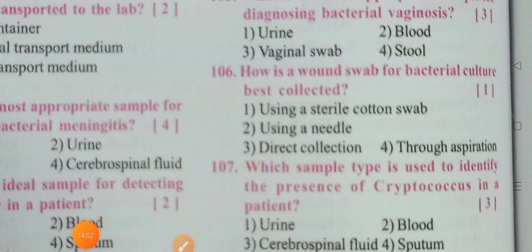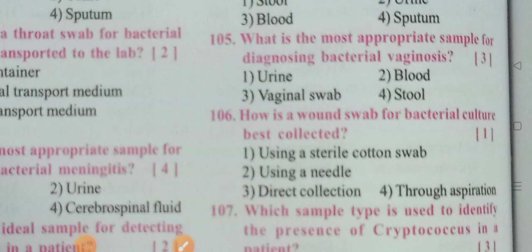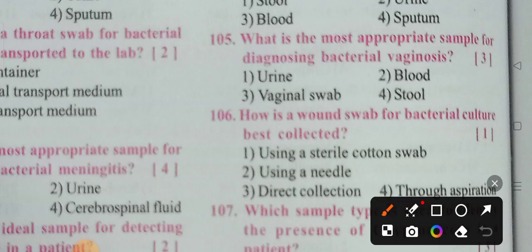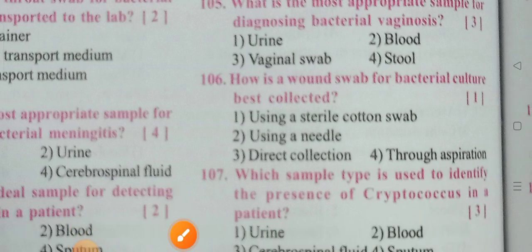Next: How is a wound swab for bacterial culture best collected? Options: using a sterile cotton swab, needle aspiration, or other methods. We collect the wound sample using a sterile cotton swab and send it to the lab for diagnosis. Option one — sterile cotton swab — is the correct answer.